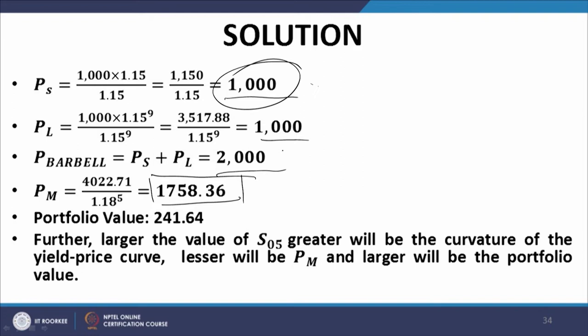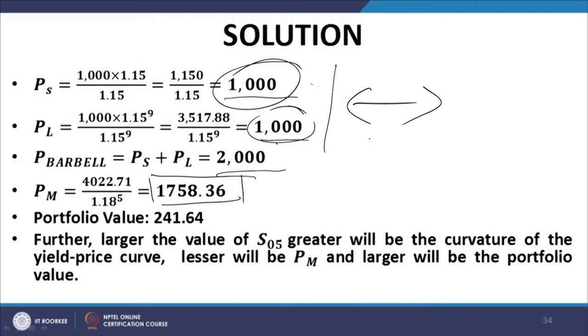There is no change in the 1-year and the 9-year rates, and consequently the values of 1000 for the short maturity bond and 1000 for the long maturity bond comprising the barbell remain the same after the shift. After the shift, Ps continues to be 1000, Pl continues to be 1000, and P barbell is equal to 2000. However, Pm, which was 2000 before the shift, has declined to 1758.36, thereby leading to a profit or portfolio appreciation of 241.64.